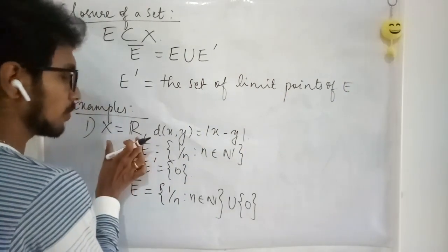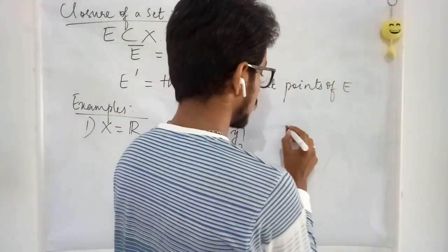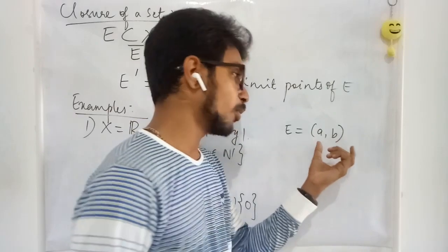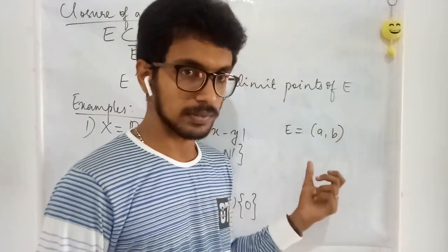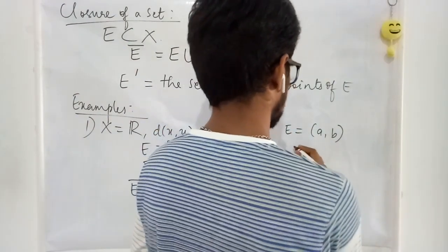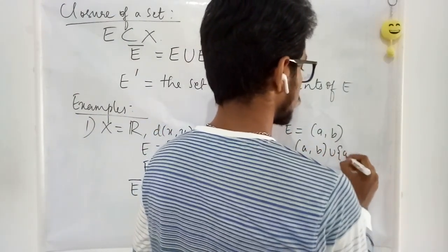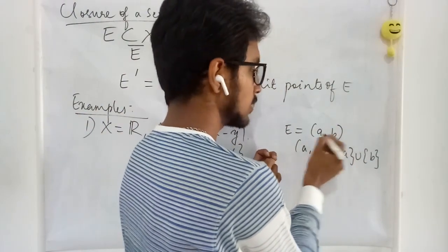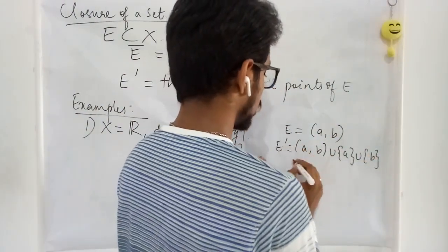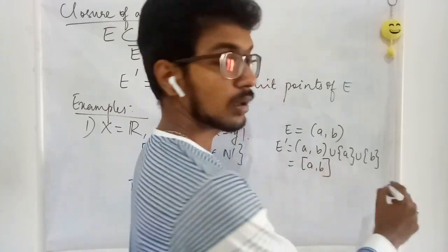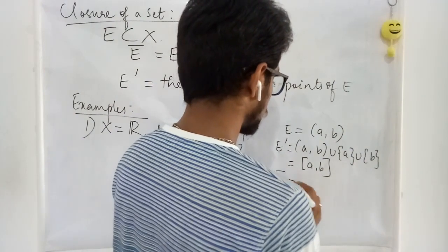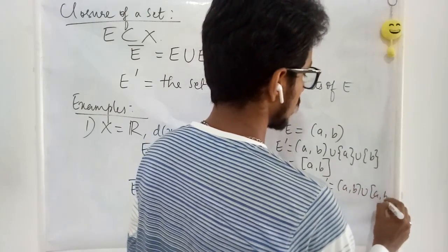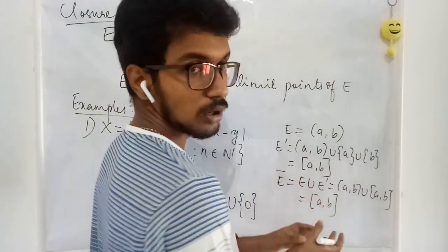In the same space with the same metric, let me take E to be the open interval (a, b). What will be the limit points? All the points inside this set are going to be limit points, as well as the boundary points — the two endpoints a and b. So the limit point set is going to be the closed interval [a, b]. Therefore the closure, E union E prime, is (a, b) union [a, b], which gives us [a, b].